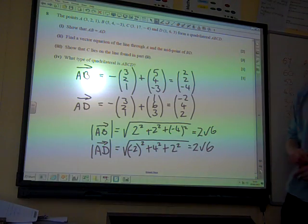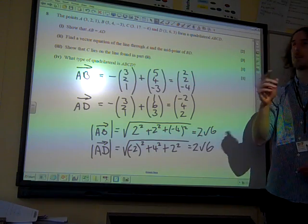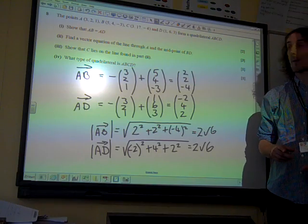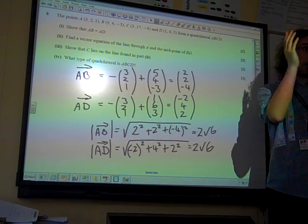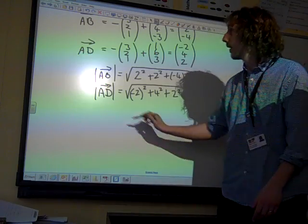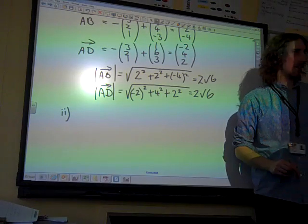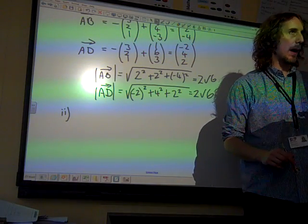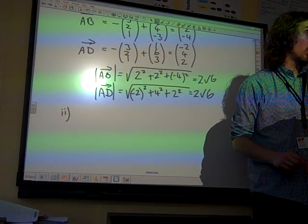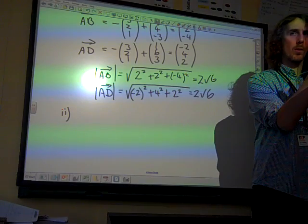Part 2. Find a vector equation of the line through A and the midpoint of B, D. Now, actually, you've probably got enough to try and come up with some kind of diagram. I just did this very much by thinking, well, if we're going to find the midpoint, this is going back, there's a couple of ways you could do this, but this is going back to core 2, core 1 even, and the midpoint between two points in coordinates.